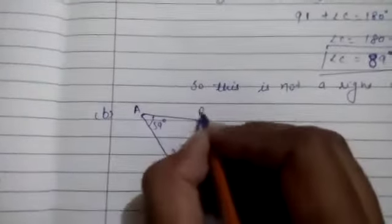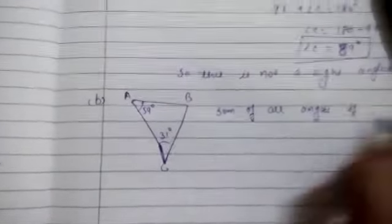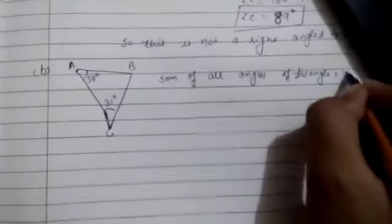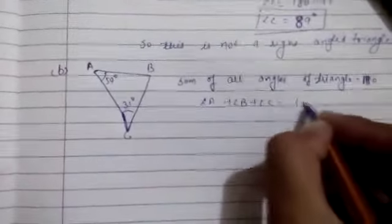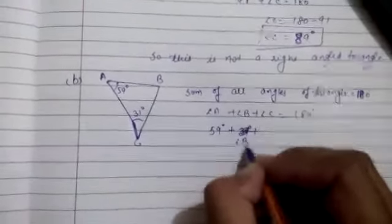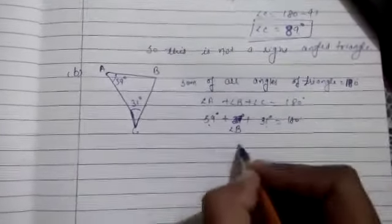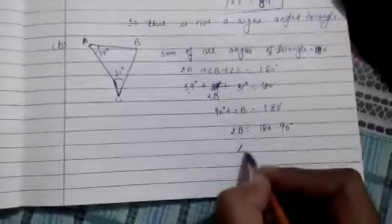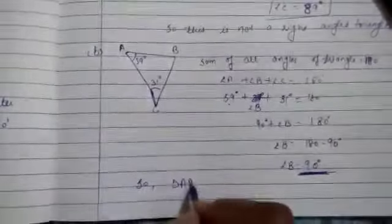Next, part B. For triangle ABC, sum of all angles equals 180 degrees. Angle A is 59 degrees, angle C is 31 degrees, and we calculate angle B. So 59 plus 31 equals 90, meaning angle B equals 180 minus 90, which is 90 degrees. Since angle B is 90 degrees, triangle ABC is a right-angled triangle.